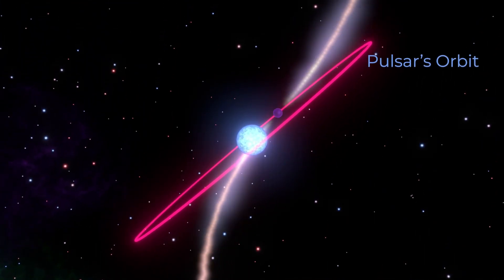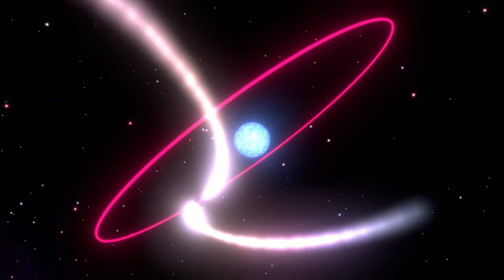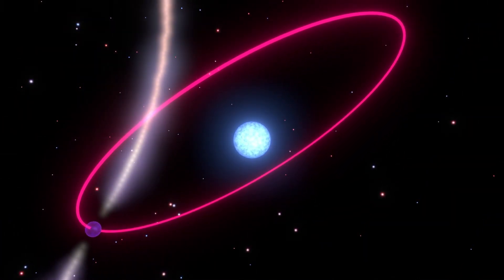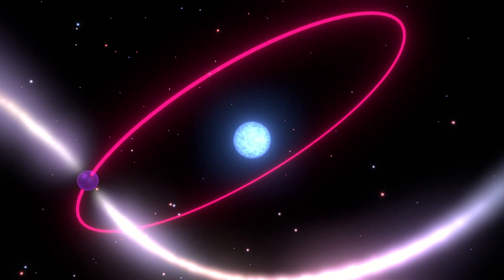Our team has been mapping the orbit of the pulsar in a series of campaigns since the early 2000s. We found that not only is the pulsar's orbit shrinking because of the emission of gravitational waves, its entire orbit was also tumbling in space.